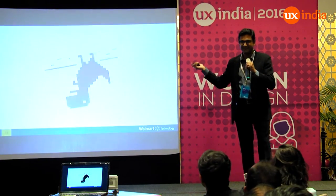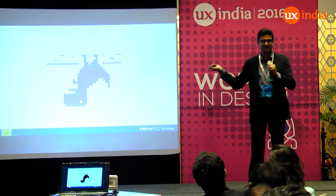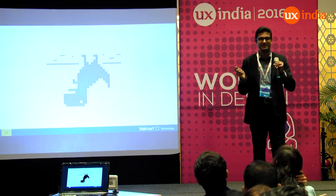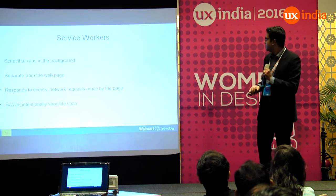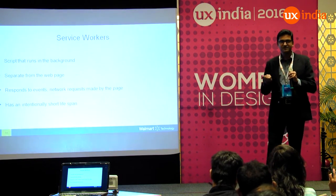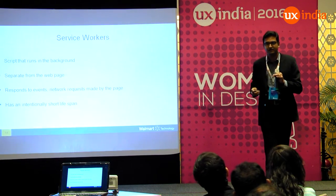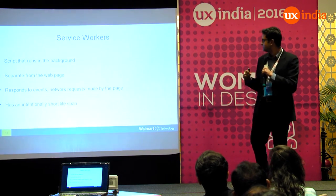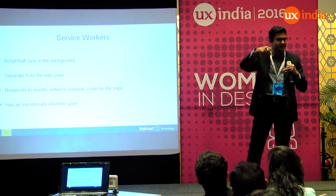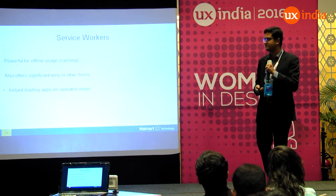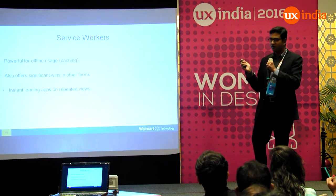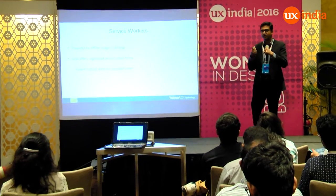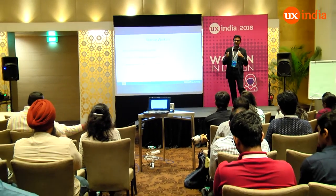The idea is to build an app that never shows you an offline dinosaur. Applications should always be available. The way you do this in a progressive web app is through service workers — scripts that run in the background, separate from the web page. They respond to events and network requests, have a short lifespan, and are powerful for offline usage. You can cache content so that when you're offline, the app still works with previously cached data.